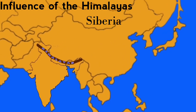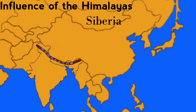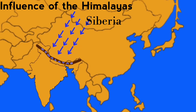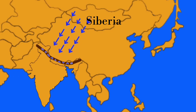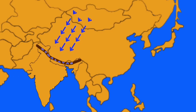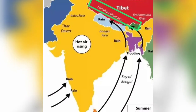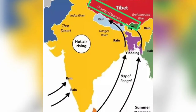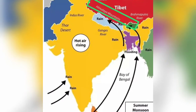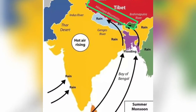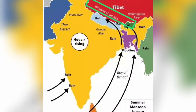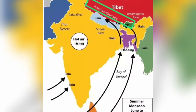Moving to the influence of the Himalayas: the Himalayas protect India from the bitter cold winds blowing from Siberia. Therefore, India does not experience severe cold conditions during the winter season. During summer, the Himalayan range obstructs the rain-bearing southwest monsoon winds and brings plenty of rainfall to the northern plains.